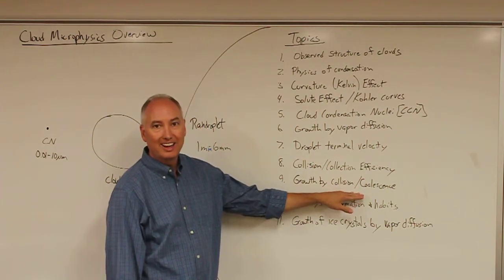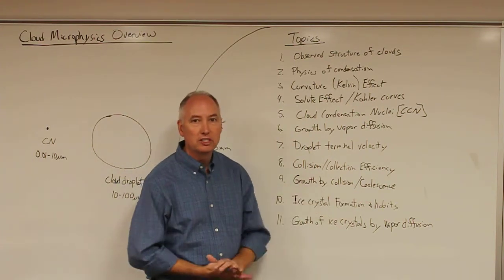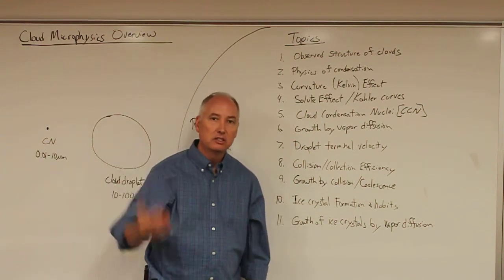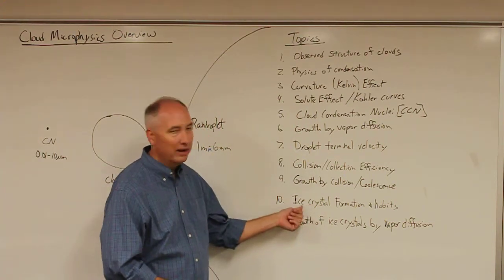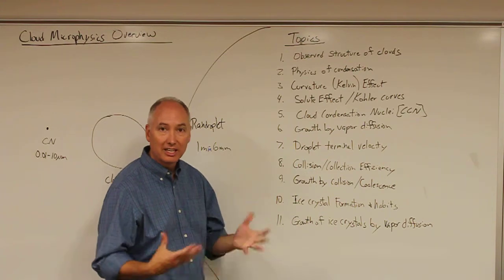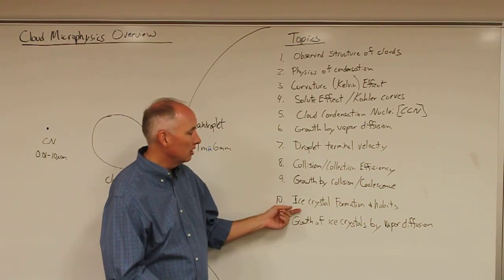Everything up to this point has been in a warm phase, which means liquid water. But we know that these clouds often extend to altitudes where the temperature is below freezing, and then we'll start to talk about what happens when these clouds start to glaciate or turn to ice.